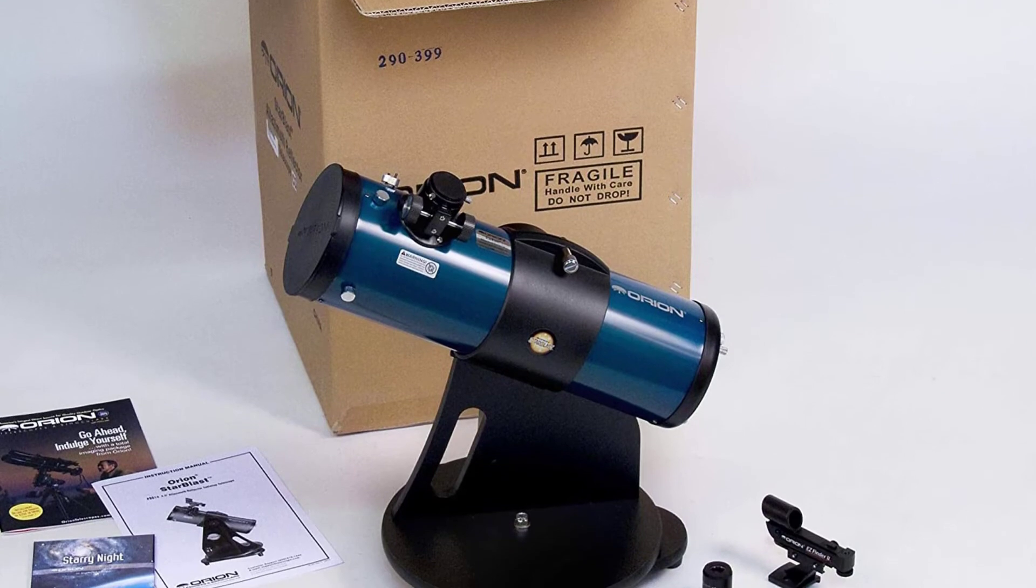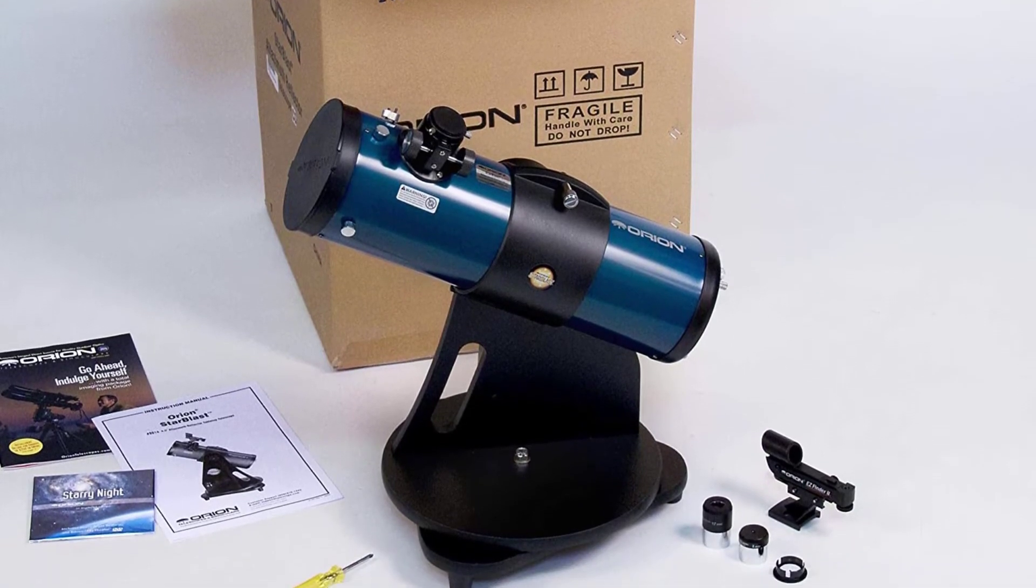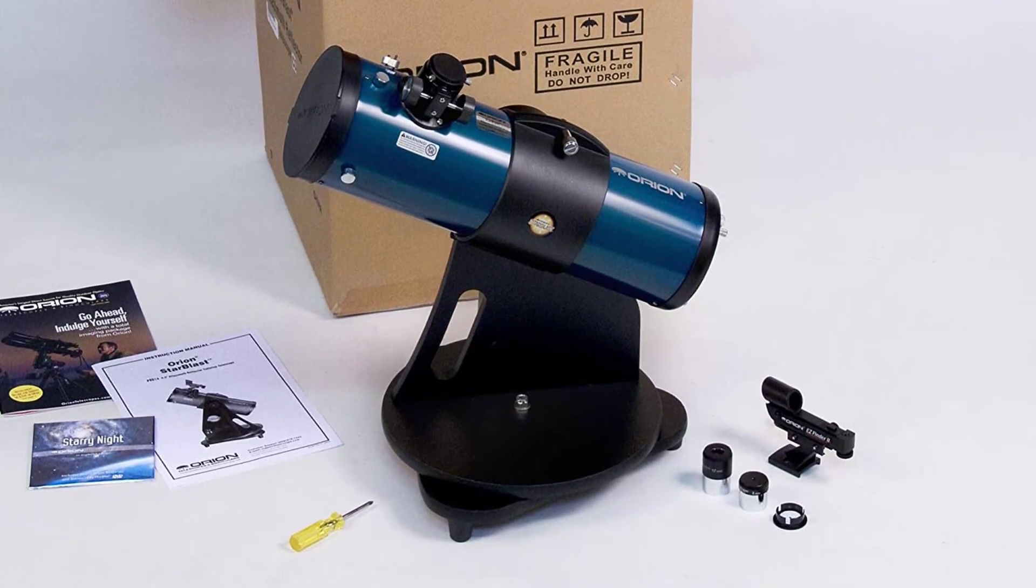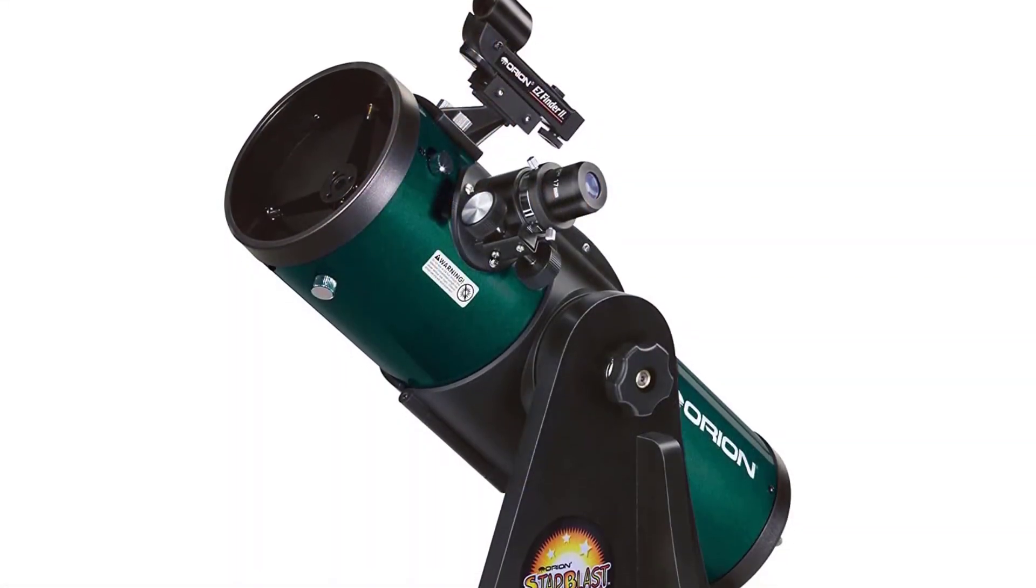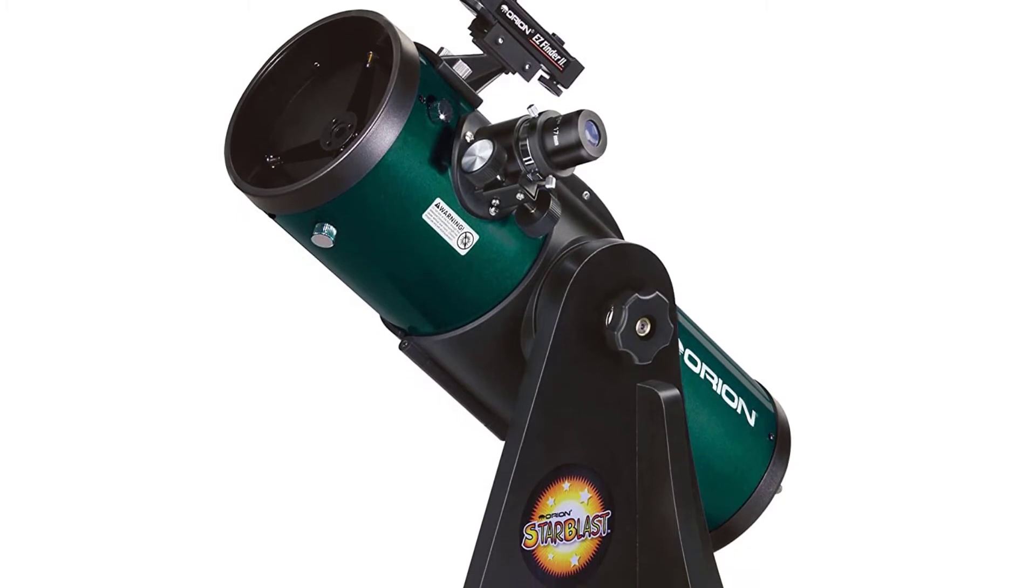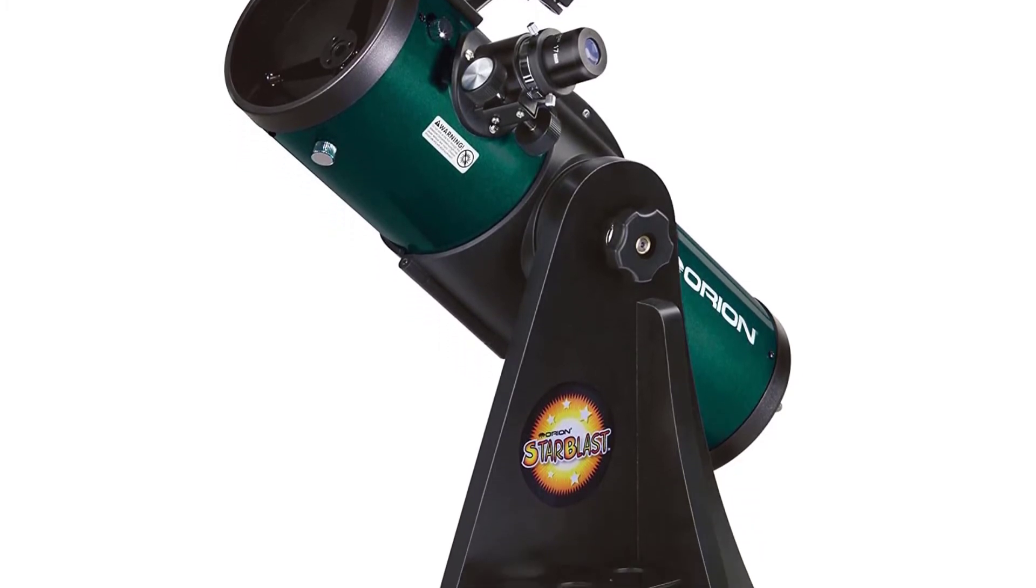This grab-and-go telescope has a focal length of 450mm with a stable tabletop base that provides smooth altazimuth motion, making it easy to manually track celestial bodies, another reason why it's great for entry-level astronomers.